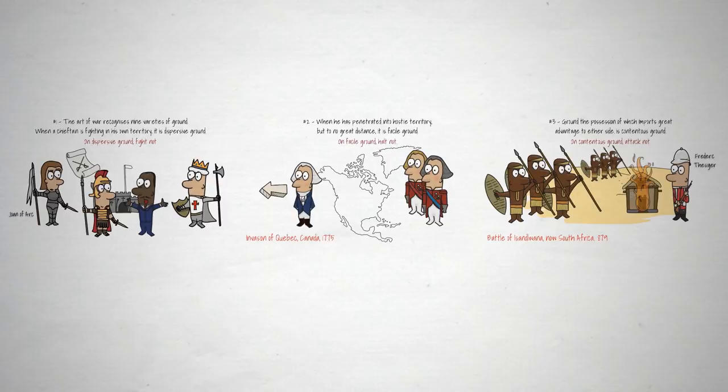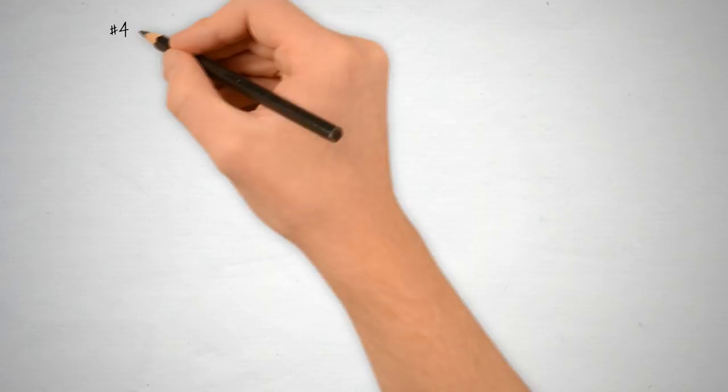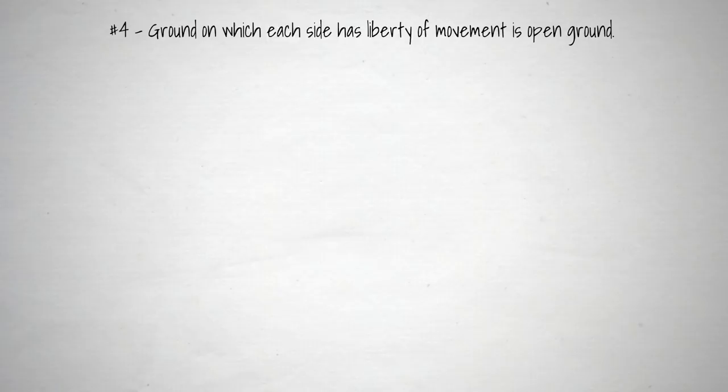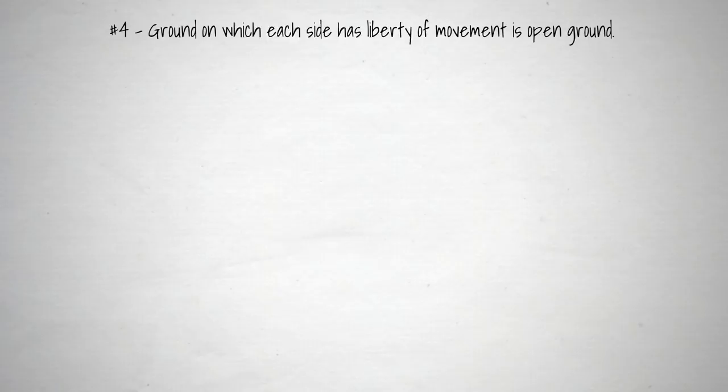Lesson number 4. Ground on which each side has liberty of movement is open ground. On open ground, do not try to block the enemy's way. Trying to block an enemy on open ground leaves you susceptible to being attacked from more than one side. In extreme circumstances you could be completely surrounded.